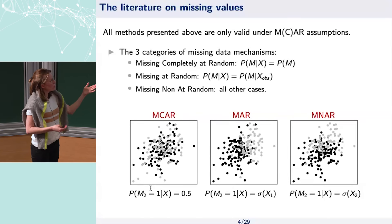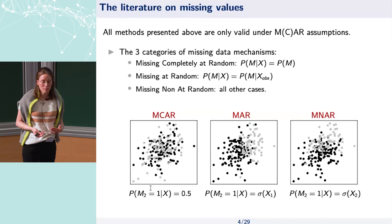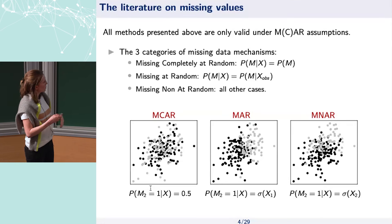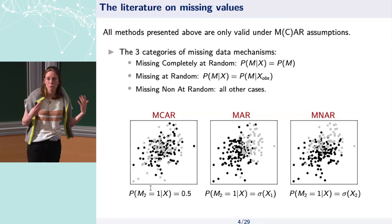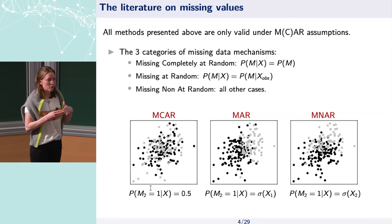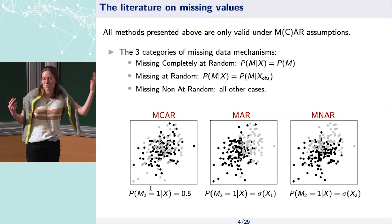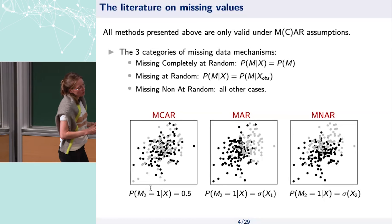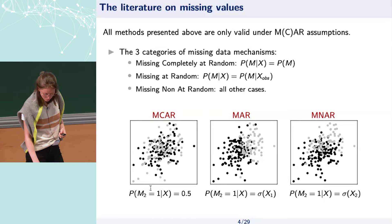And lastly, you have everything else gathered into the missing not-at-random (MNAR) mechanism. Here, typically, the second variable can be missing depending on its own value — for example, if my variable takes high values, it's going to be missing most probably. That is the literature from the last 50 years.